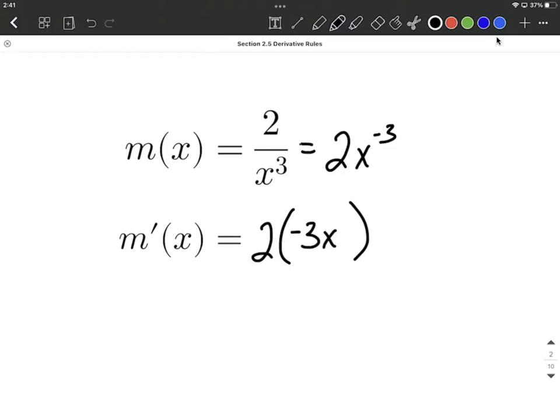And this is where a lot of students go a little bit wrong when you're getting used to them. It's negative three minus one. So that's going to be negative six out in front, x to the negative fourth power.